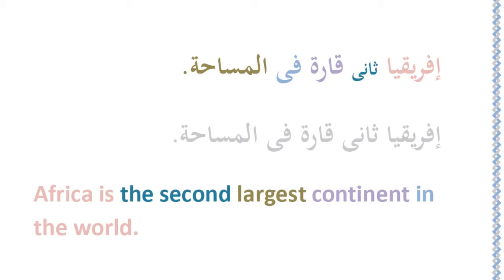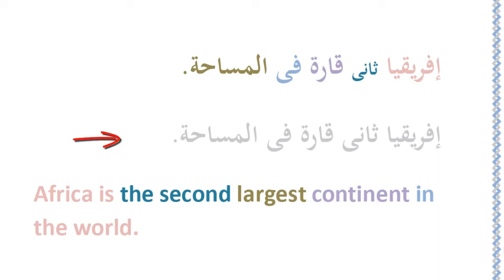Ifriqiya Sanikara fi al-Masaa. I colored the words to make things easier for you. As you can see, there are words in pink, green, and blue. The first word, Ifriqiya, means Africa in English, so I colored them with the same color, which is pink. The same applies to the rest of the words. You may also notice that I repeated the sentence but changed its color to gray so you can print the file and write over those gray words with a black pen.